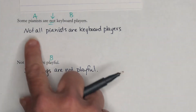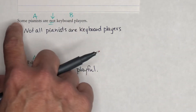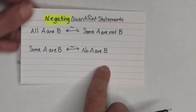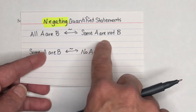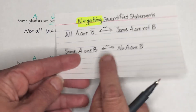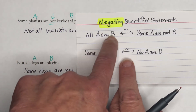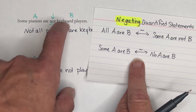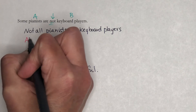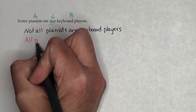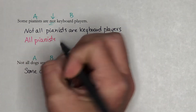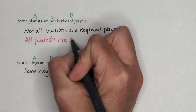For 'Some pianists are not keyboard players' — pattern: Some A are not B — its negation is: All A are B. So: all pianists are keyboard players is the negation of that statement.